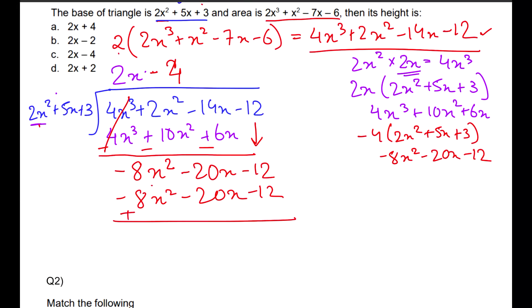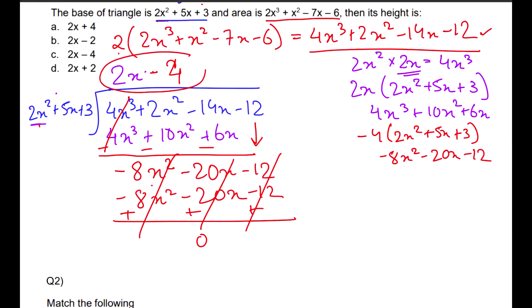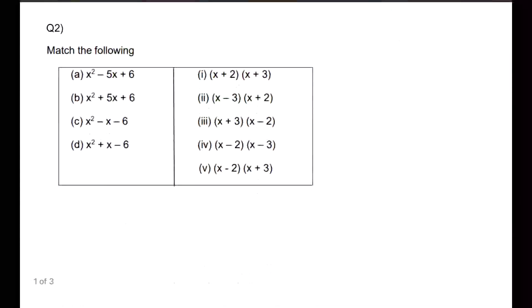If I change the signs I will get a 0 remainder. So therefore I get the value of my height, which is the quotient of this expression, as 2x − 4, option C. So this is the general basic method. If you have this method then you can solve any division-based algebra question.